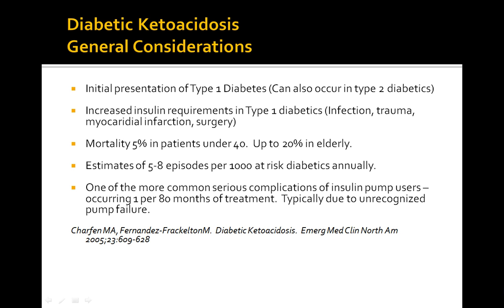It's important to remember that DKA has a variety of causes, including infection such as pneumonia or urinary tract infection, or inflammation from pancreatitis or cholecystitis. Insulin deficiency due to failure to take enough insulin, ischemia from the myocardium, or cerebral infarction can also lead to DKA. Chronic alcoholics and drug abusers with intoxication, as well as iatrogenic causes like thiazides or glucocorticoids, are additional precipitants.